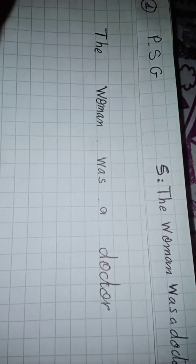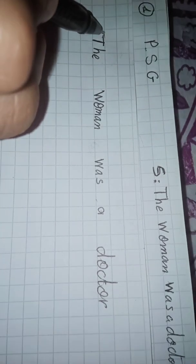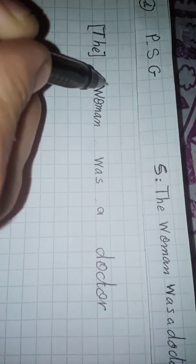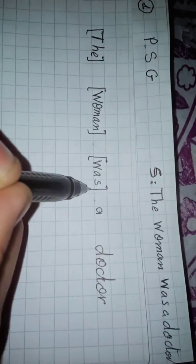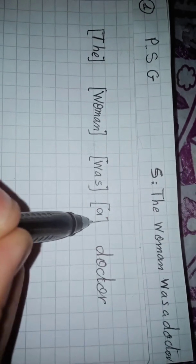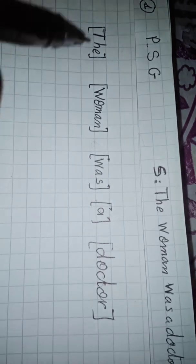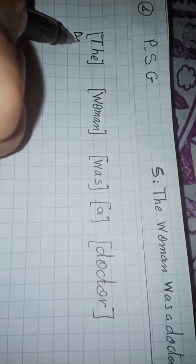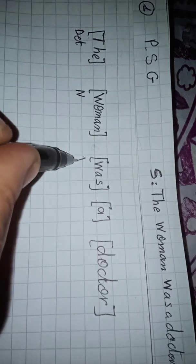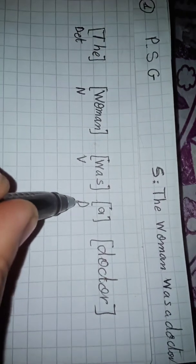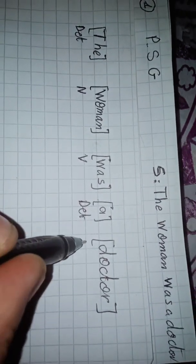First, we should specify each item individually. So we have here an article, the determiner article, we have a noun, we have the verb, we have another determiner and we have a noun.